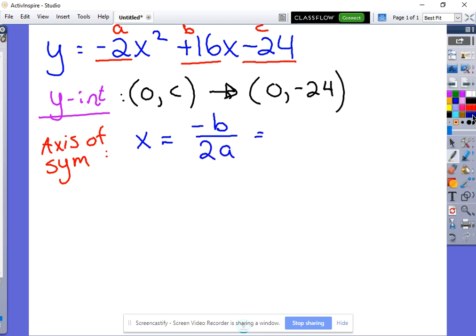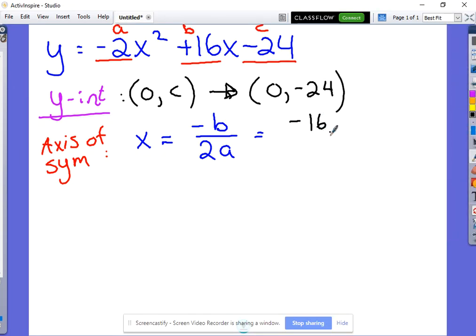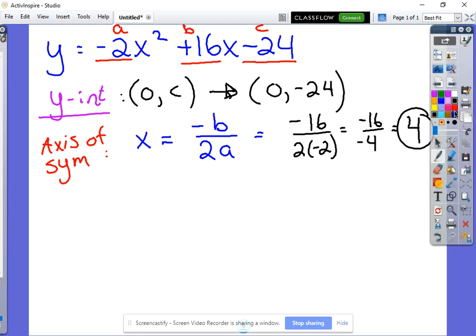So in this example, if we plug in those values, we're going to be left with the opposite of b is negative 16, 16 divided by 2 times negative 2, which in this case is negative 16 divided by negative 4, which is now positive 4. So that right there is our axis of symmetry.